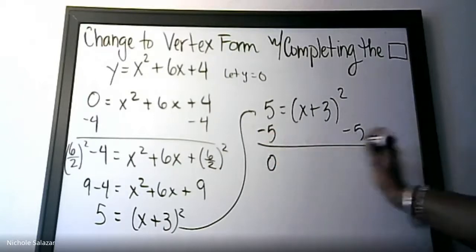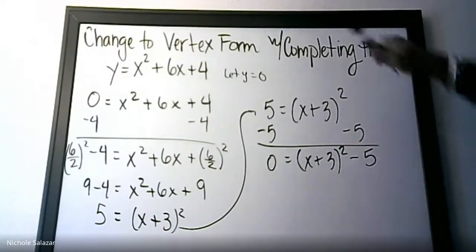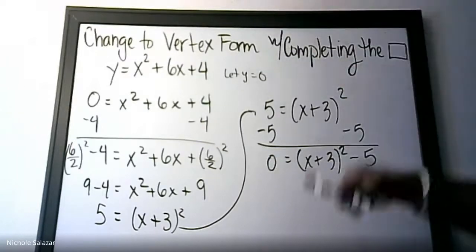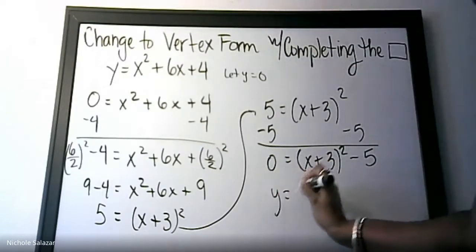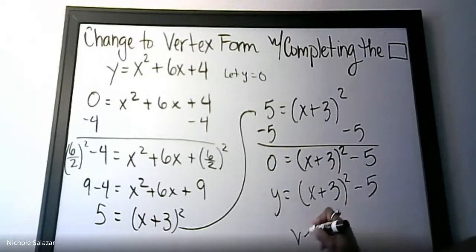So now I have 0 equals x plus 3 squared minus 5. And I let y equal 0, so I could put y back in here. Y equals x plus 3 squared minus 5, and my vertex will be the opposite of that 3, so negative 3 and negative 5.